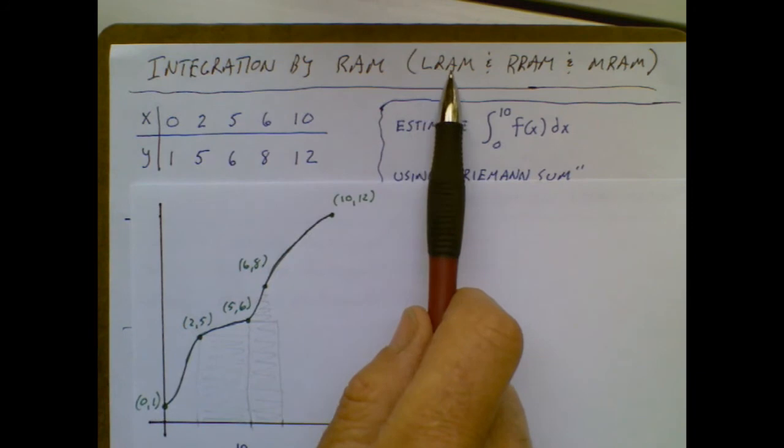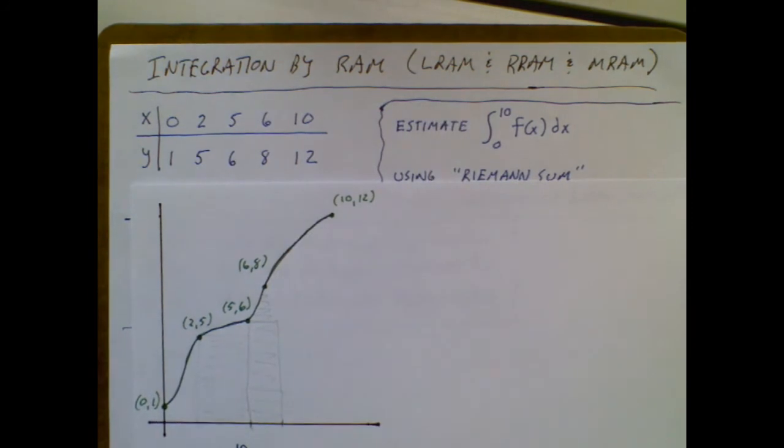Left rectangular approximation method. Now the two rectangles I just drew would be LRAM rectangles because they are connected to the graph by their left edge. So if you look at this rectangle, the left edge hit the graph. In this rectangle, this left edge hit the graph. I'm going to pause this and erase it and then draw a couple RRAM rectangles.